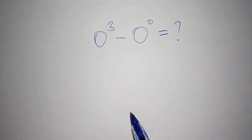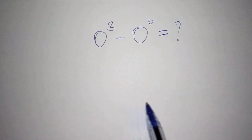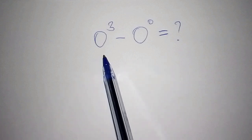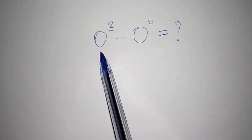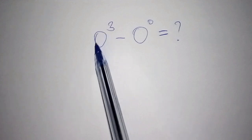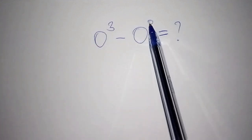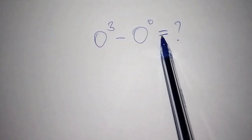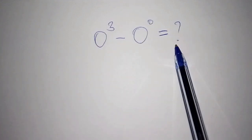Let us begin working it out. We have 0 to the power of 3 minus 0 to the power of 0. What is the answer?